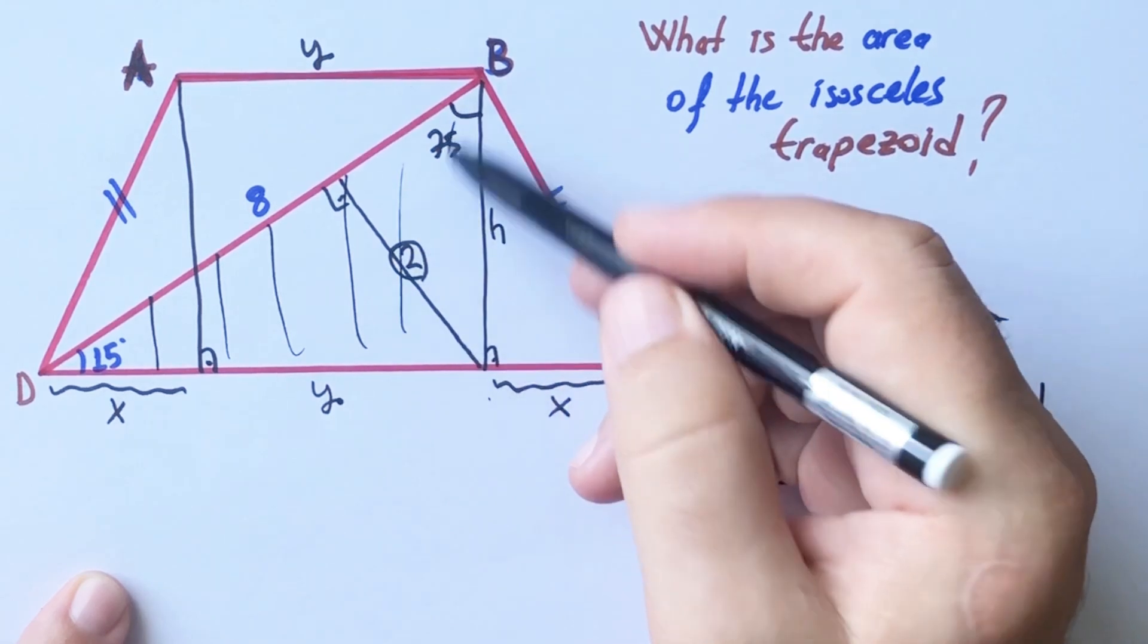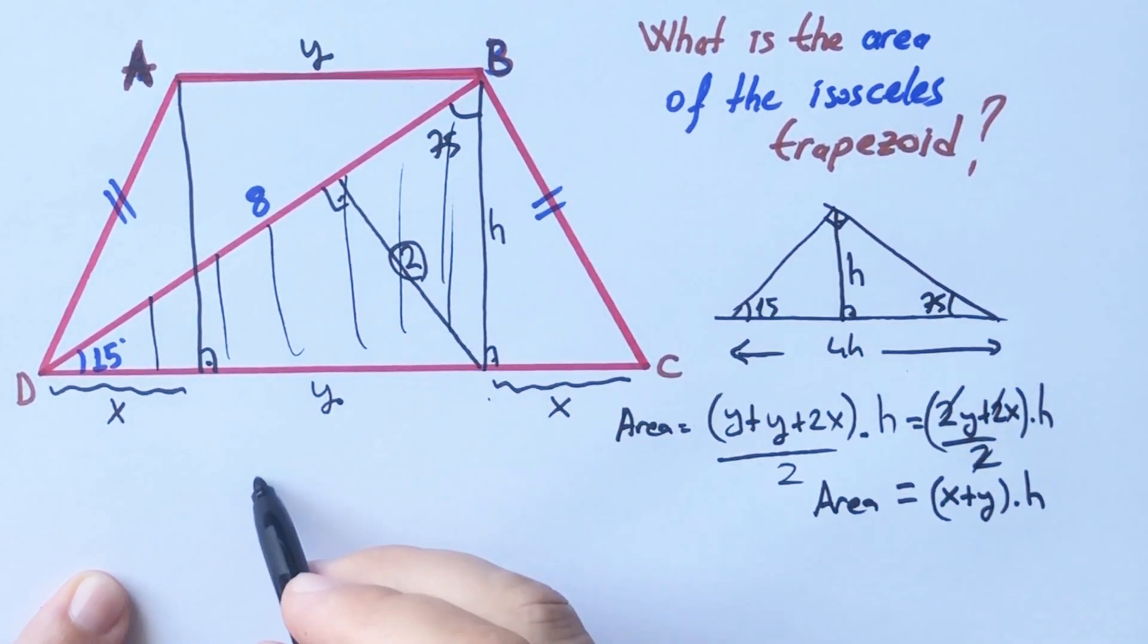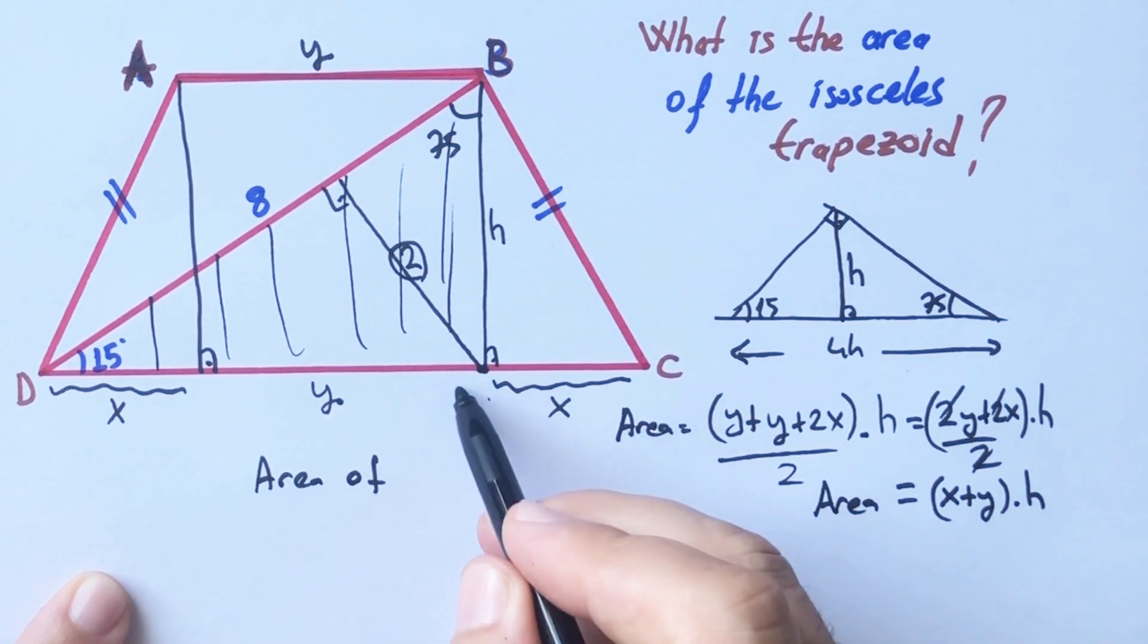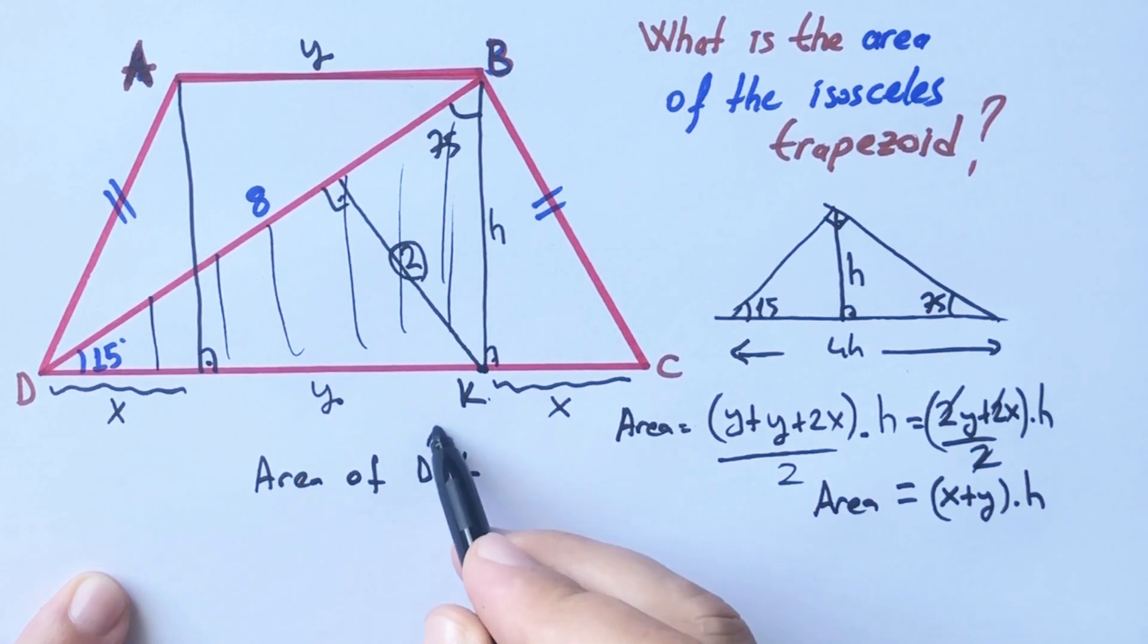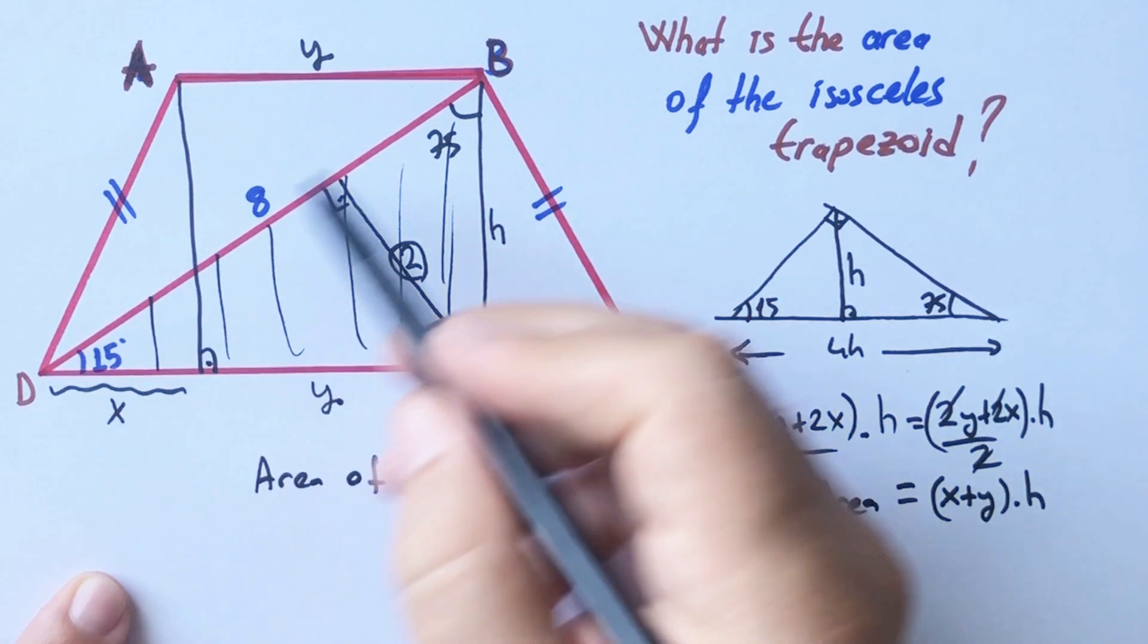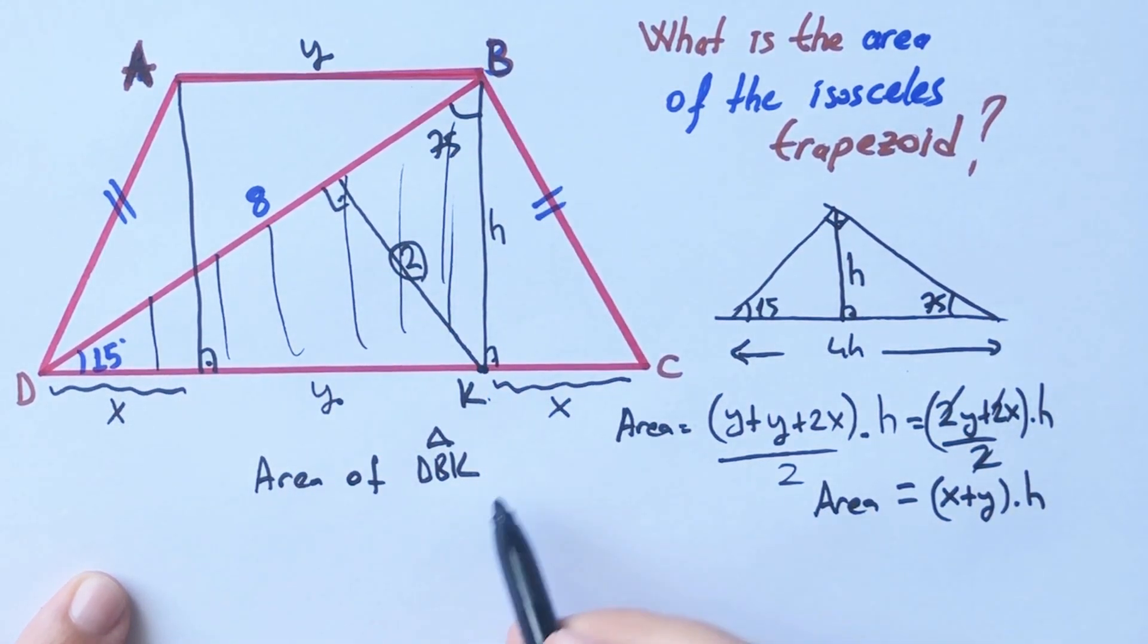If we calculate this triangle area, let's call here K point. ABK triangular area equals half of the base and height.